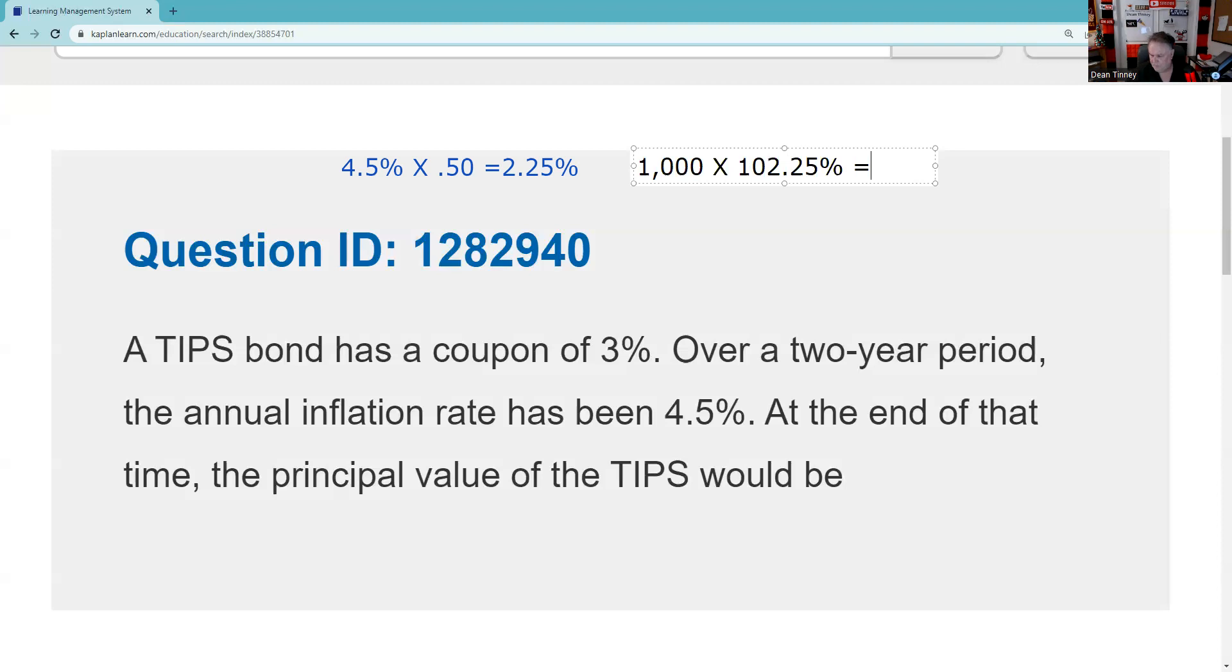And we're going to times that by 102.25%. And so that's going to be the first adjustment. So if we take $1,000 and we times it by 102.25%, we're going to find out at the end of that first adjustment, it would be $1,000 times 102.25% equals $1,022.50. So then the next time, remember, we're going to do that again.